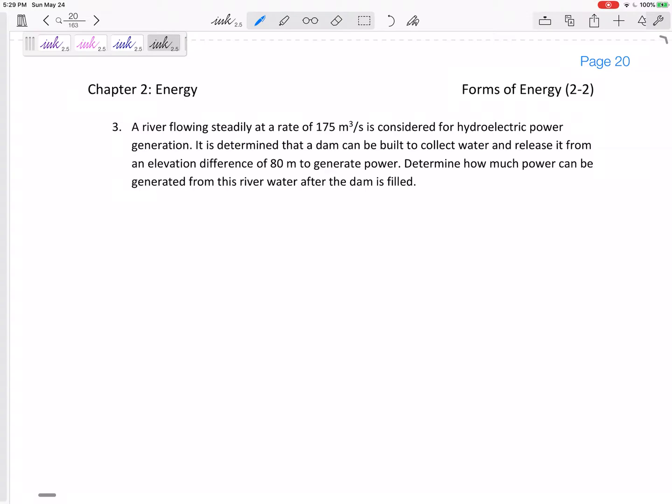So we've got a river flowing steadily at a rate of 175 meters cubed per second, and it's considered for hydroelectric power generation. It's determined that a dam can be built to collect water and release it from an elevation 80 meters lower to generate power. Determine how much power can be generated from this river water after the dam is filled.